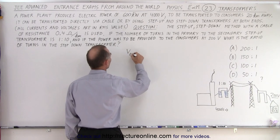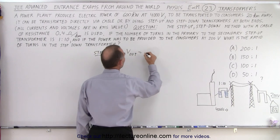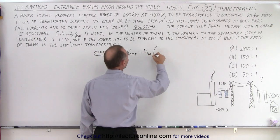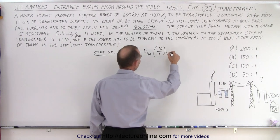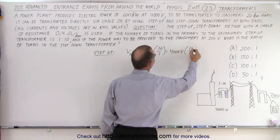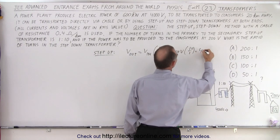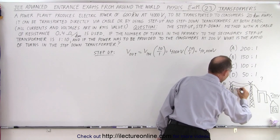So V_out, so this is on the step-up, V_out is going to be equal to V_in times the ratio of 10 to 1. So in this case that is 4000 volts times 10 over 1, which means 40,000 volts will go across the power lines.